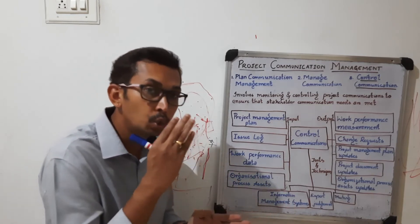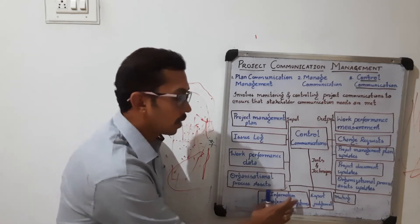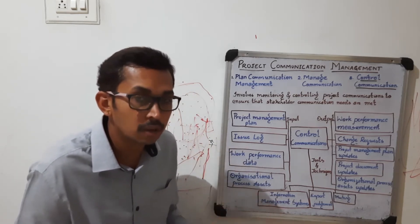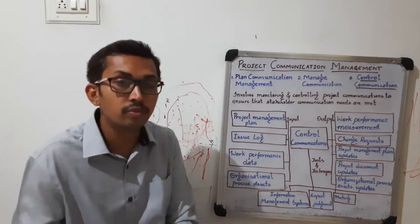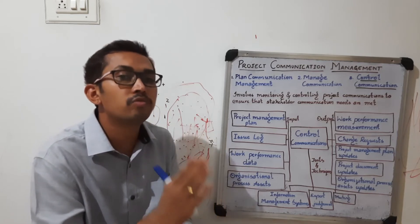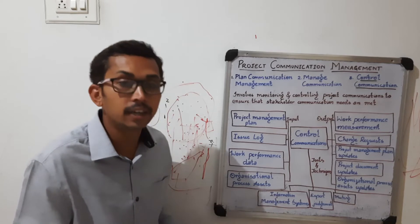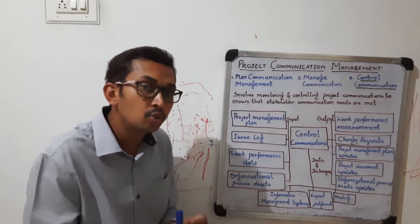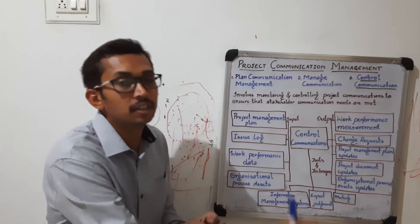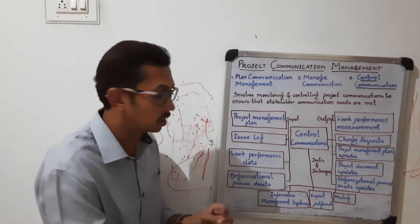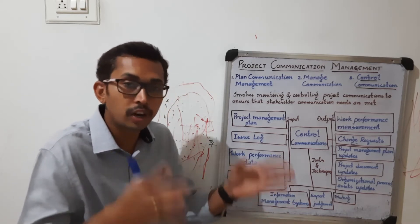The tools used during the control communication phase include the information management system. It is a computer system consisting of hardware and software that acts as a backbone for an organization. It collects and analyzes data and gives reports to management to help take necessary decisions. This is also called MIS.